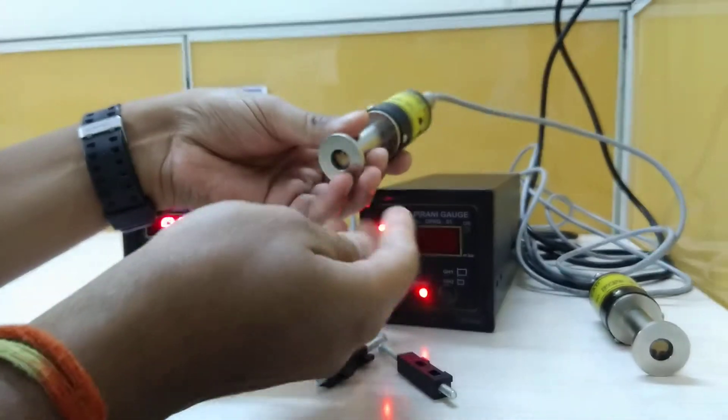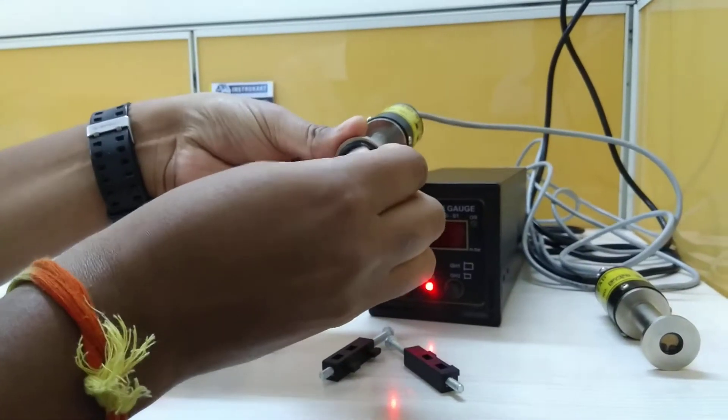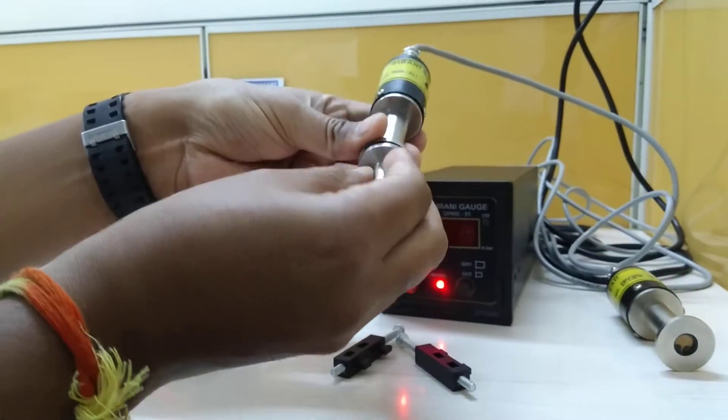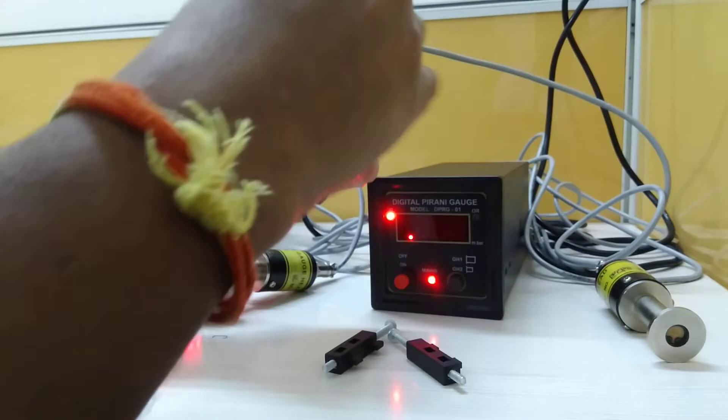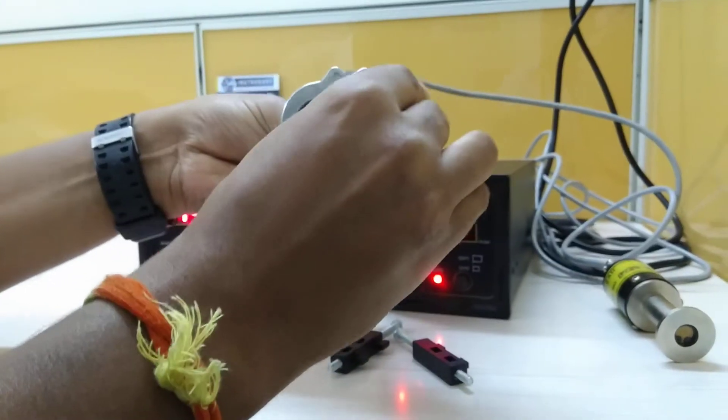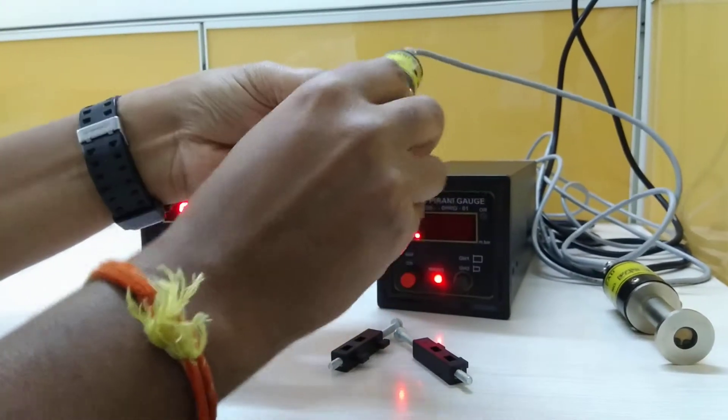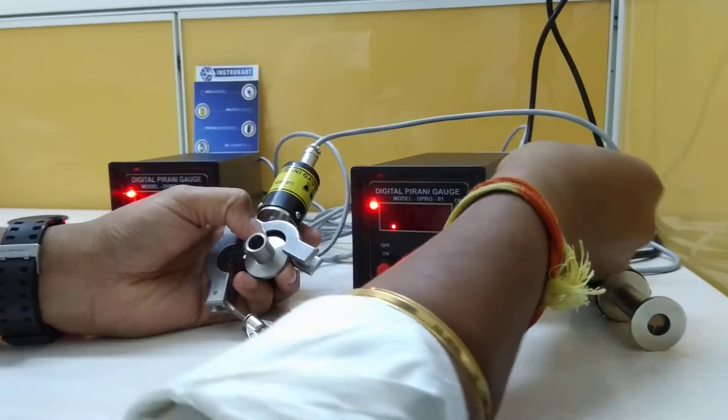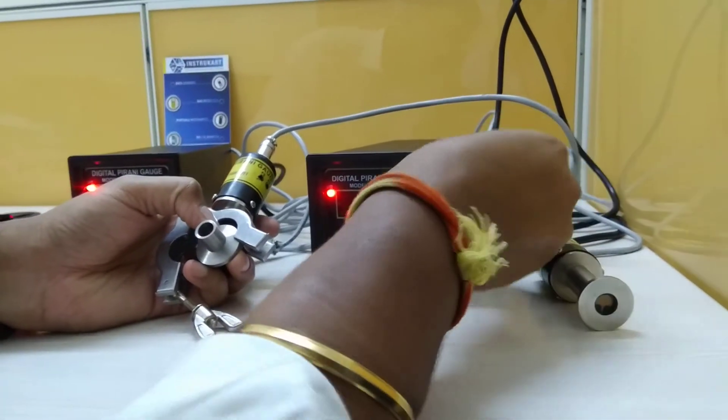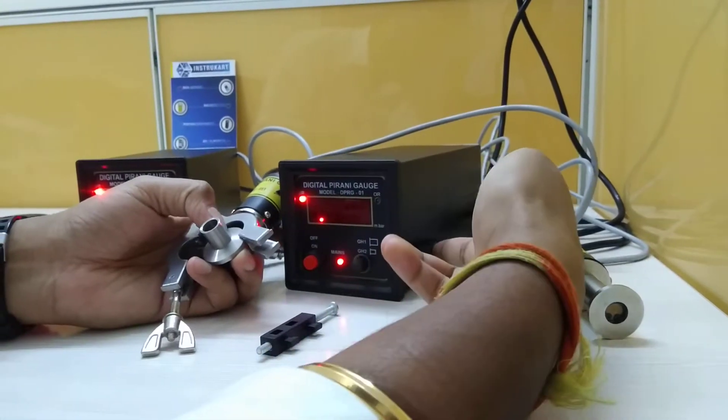When you connect it all together, it will be something like this: the O-ring goes first, then the flange fits in, and then we use the clamp to secure the whole section like this. We also have a mounting option which can be attached at the side like this.